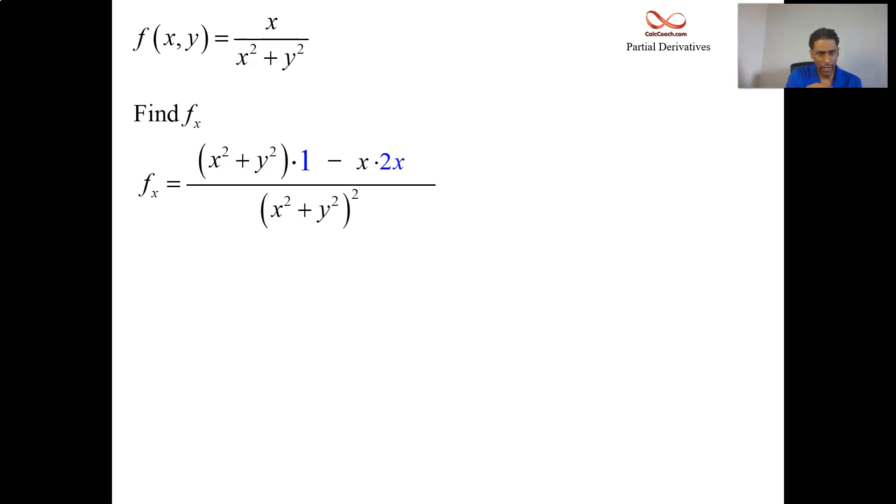Then simplifying, if you look at x² + y², but then you take away 2x², you end up with y² - x² as your numerator. The denominator is just what it was before by squaring it.